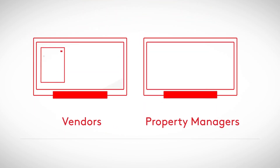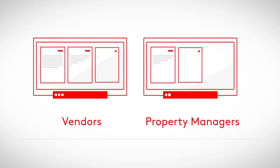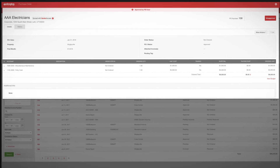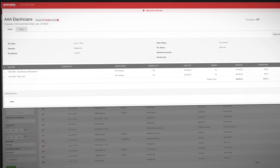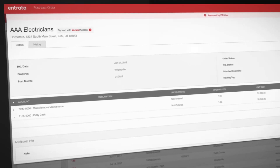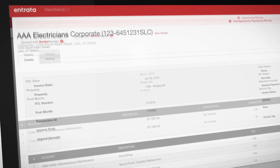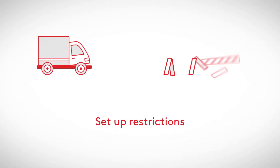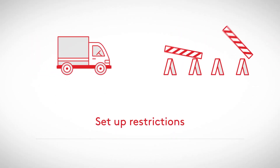You and your vendors work within the same interface, saving you time and reducing opportunities for ordering or billing errors. Your approved purchase orders are electronically submitted to vendors, while the same system lets you send invoices that automatically become part of your payable approval process.